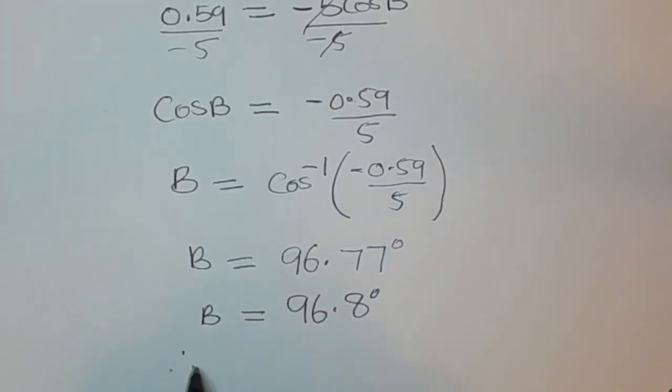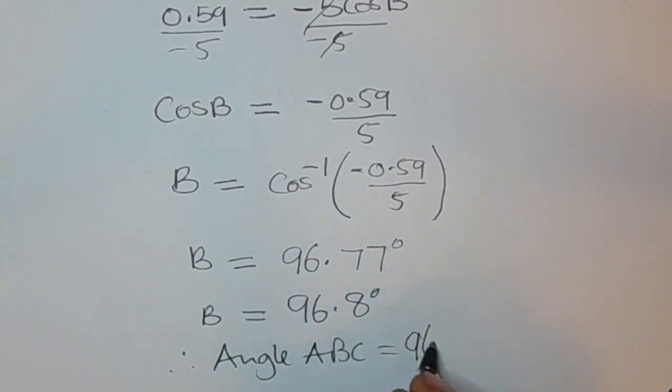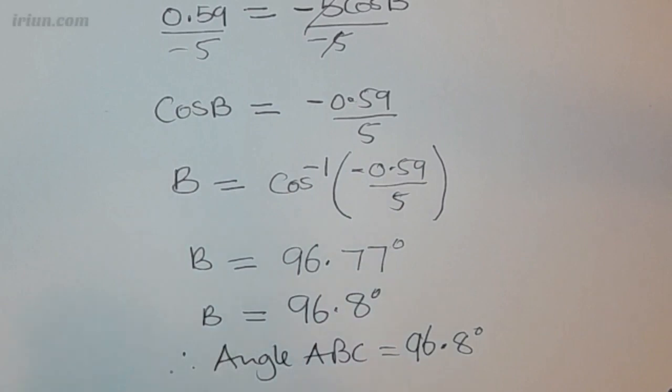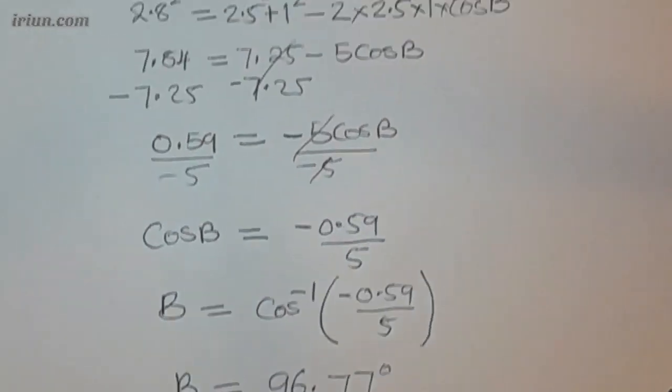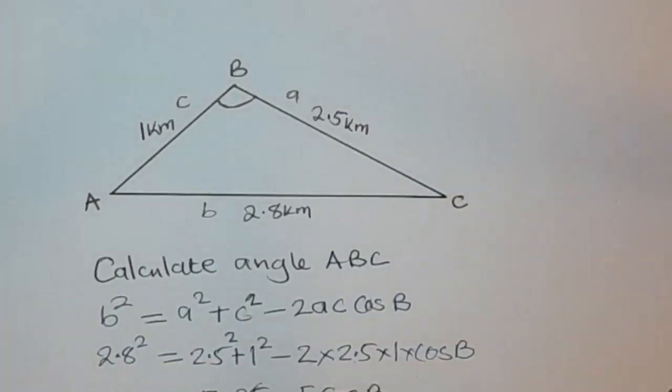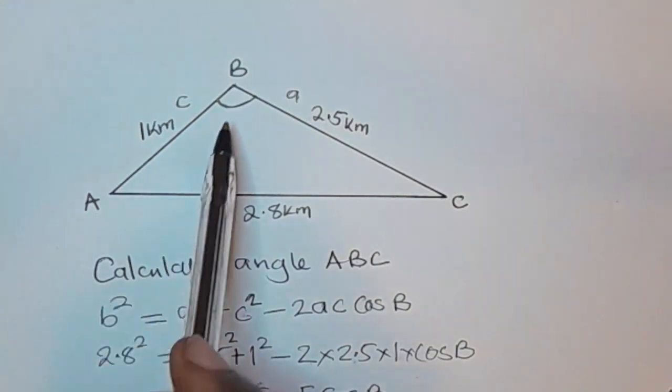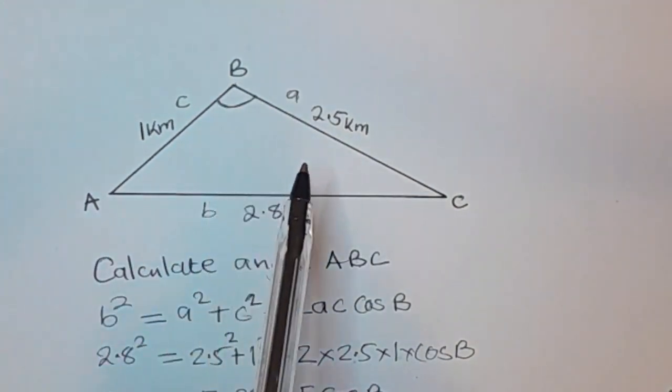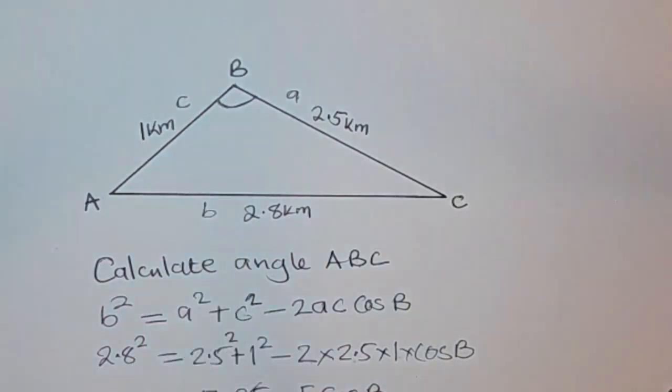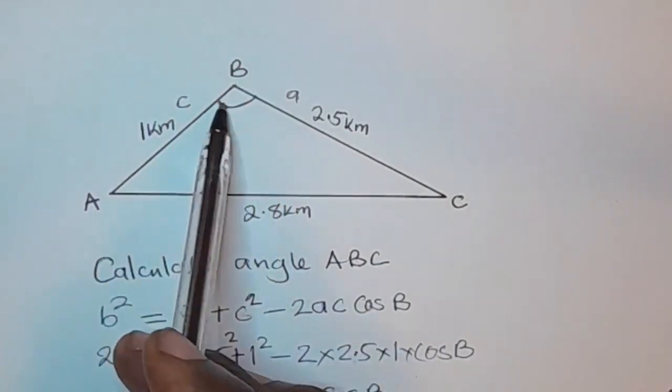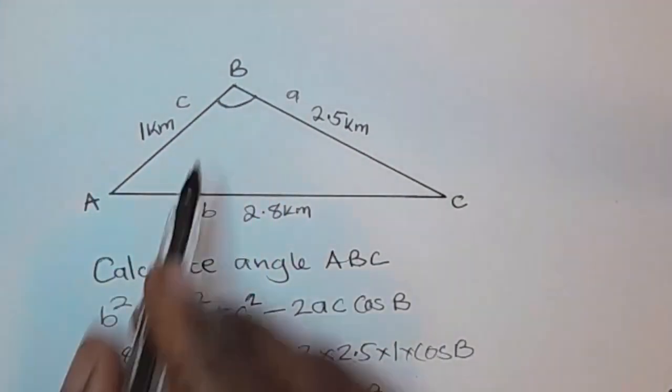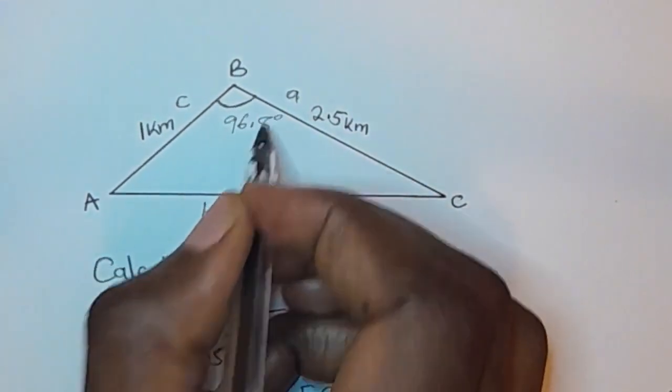So you conclude and say therefore angle ABC is equal to 96.8 degrees. So this is 96.8 degrees and it's an obtuse angle. You can even see that it's making sense. If you come back to your triangle here, this is an obtuse angle, an angle that is more than 90 degrees but less than 180. So this is the angle that we are looking for, 96.8 degrees.